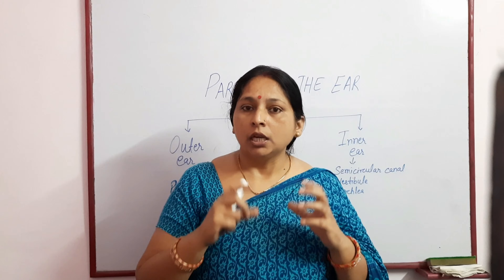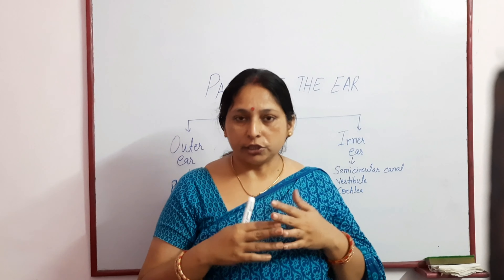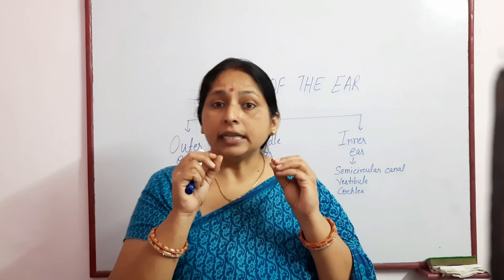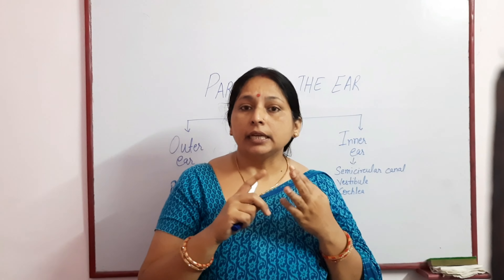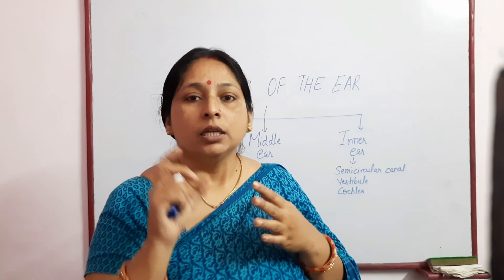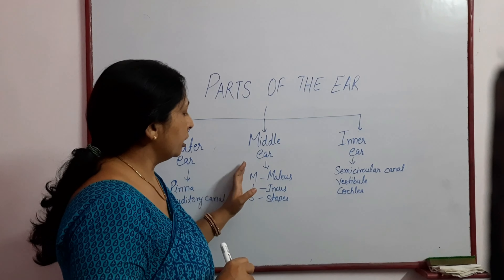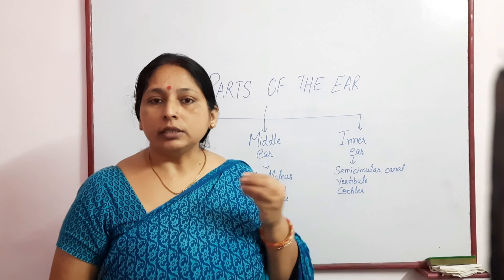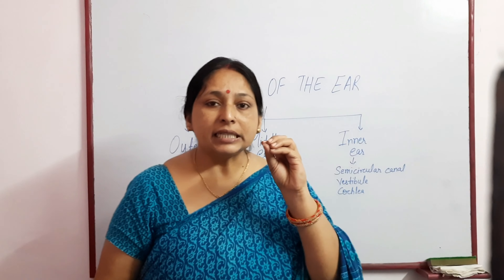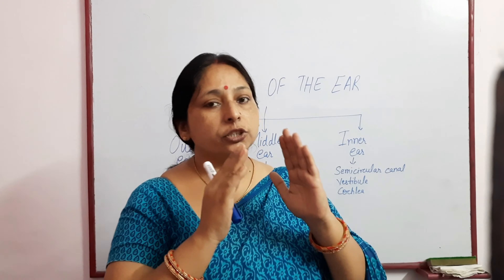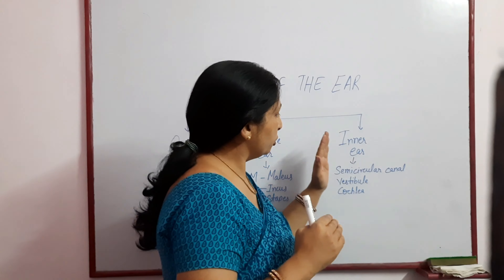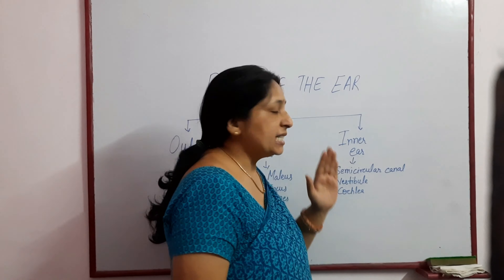From the auditory canal, sound enters the middle part of the ear, which has three tiny bones - the ear ossicles. The tiny bones are malleus, incus, and stapes. If the question is asked to name the smallest bones in the human body, the answer is the ear ossicles: malleus, incus, and stapes. The vibration or waves are then transmitted to the innermost part - the inner ear.